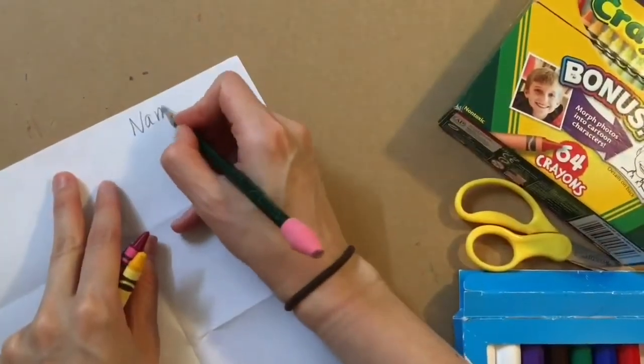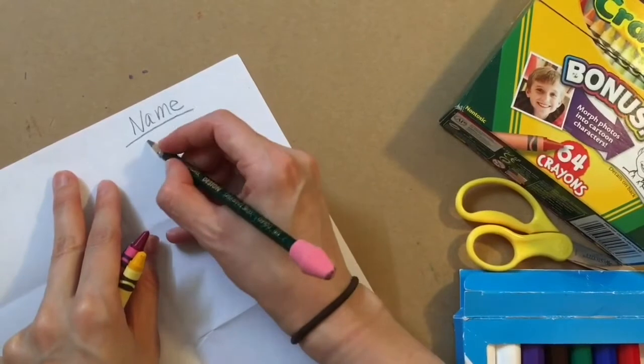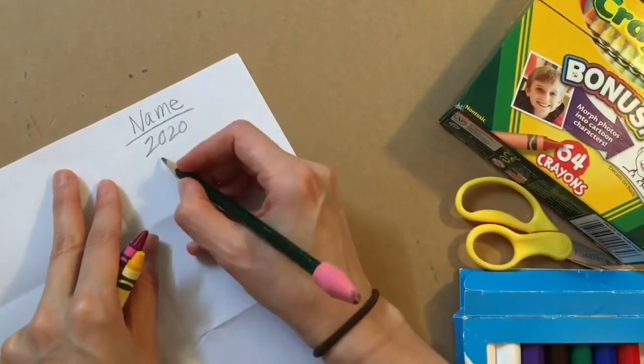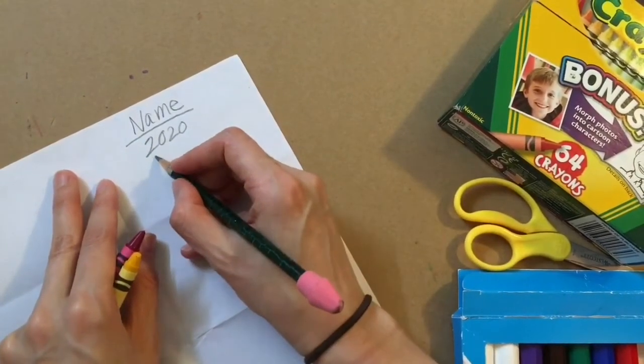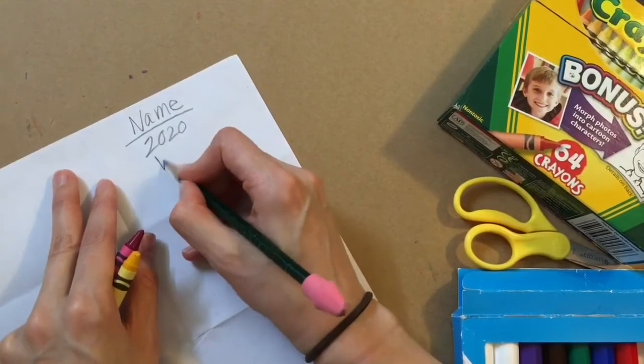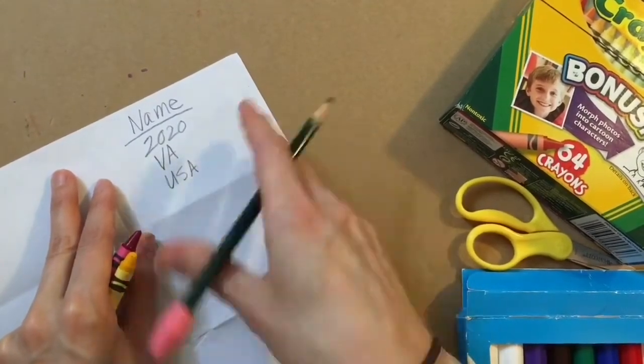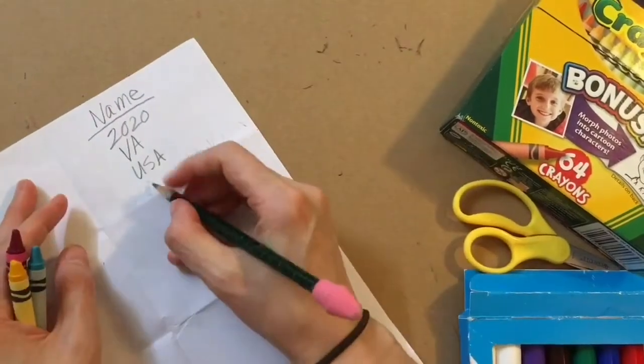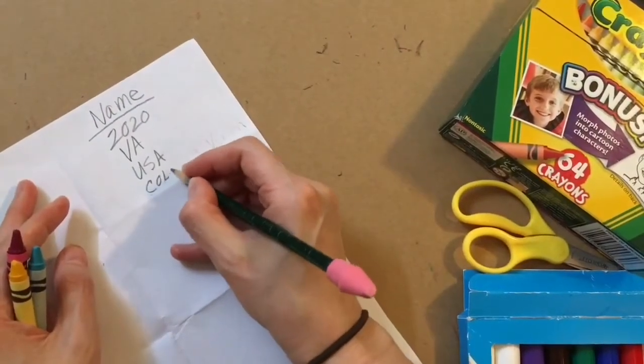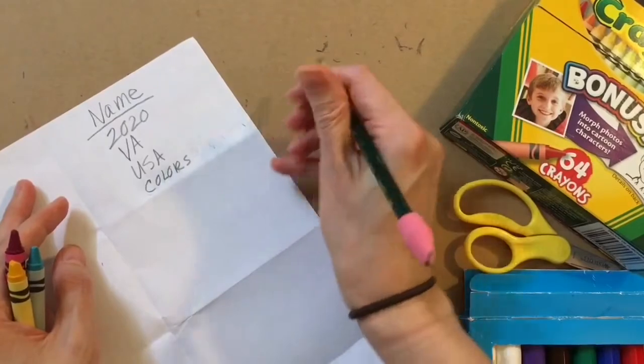And then when you're finished with a card, you can cut it out, of course. And also on the back, we're going to write your information. So your name, you could just do your first name, the date or the year. And you could put the location as kind of general, like VA USA, or just USA if you want. And then if you want, you could put a title. So I'm going to put colors on this for the title. That's optional.